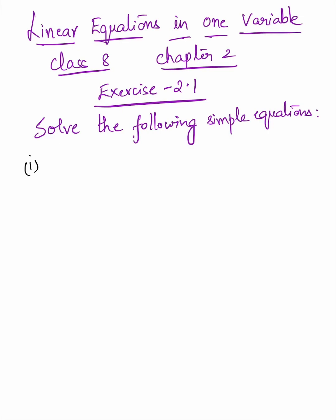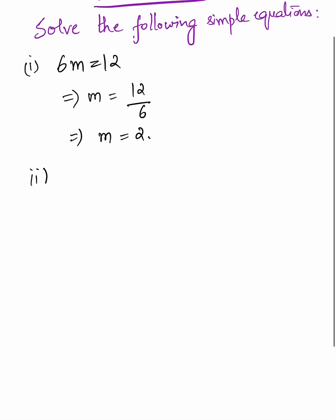Linear equations in one variable, Exercise 2.1: solve the following simple equations. First, 6m equals 12. Here we transpose the terms to get the value of m. So if 6m equals 12, then m equals 12 divided by 6, which means m equals 2.